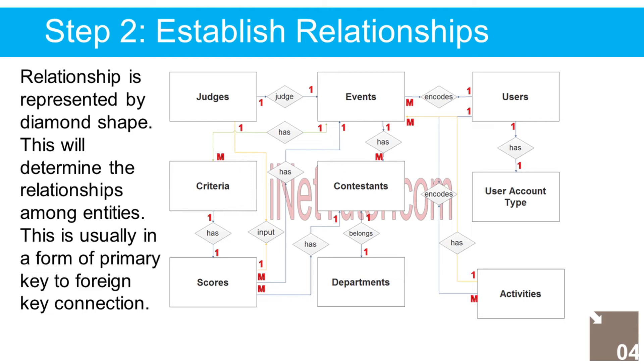Continuing the relationships: 7. The contestant will receive a score or rating from a judge — 1-to-many relationship. 8. An event consists of multiple criteria or ways of rating and scoring — 1-to-many relationship. 9. A judge will be assigned for every event — 1-to-1 relationship. 10. A criteria requires a score or rate — 1-to-1 relationship. 11. The judge will input a score — 1-to-many relationship.